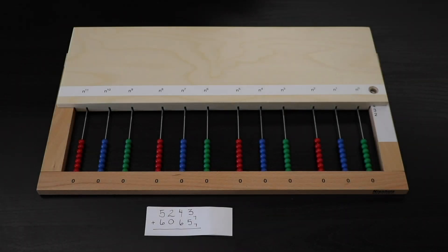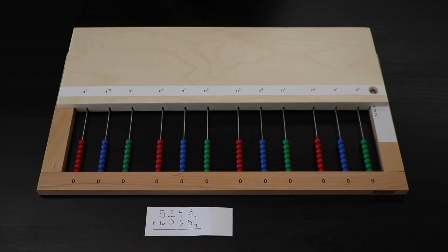Let's say we want to add our 2 addends of 5, 2, 4, 3, base 7, plus 6, 0, 6, 5, base 7. We identify each one of the addends by calling out the digits. I cannot say 5,243 because that refers to base 10. So we just name the digits.